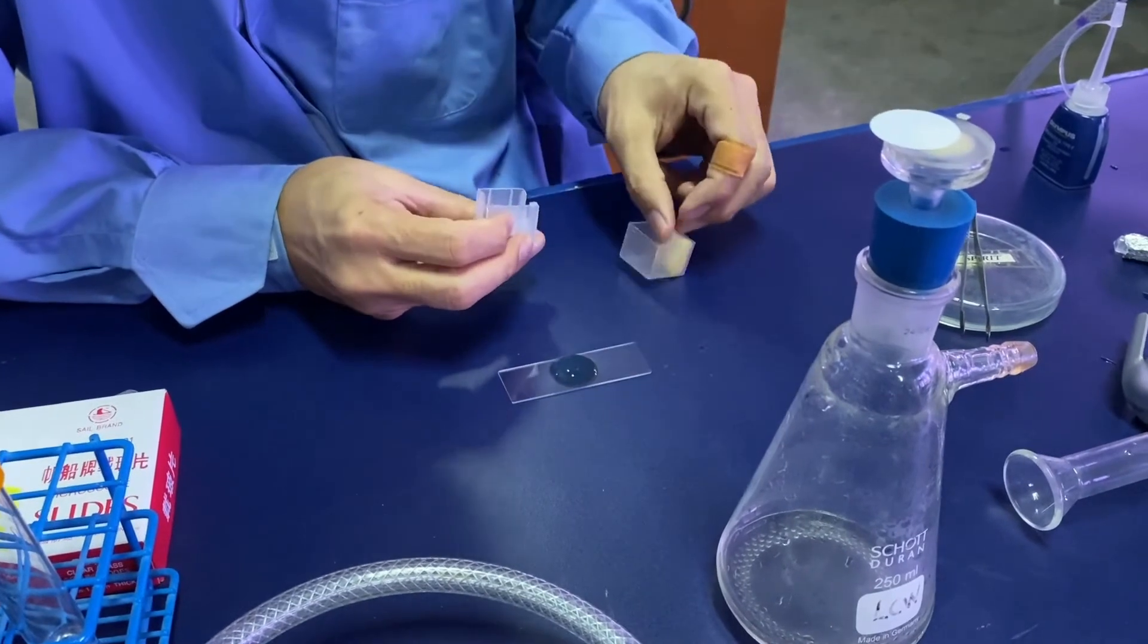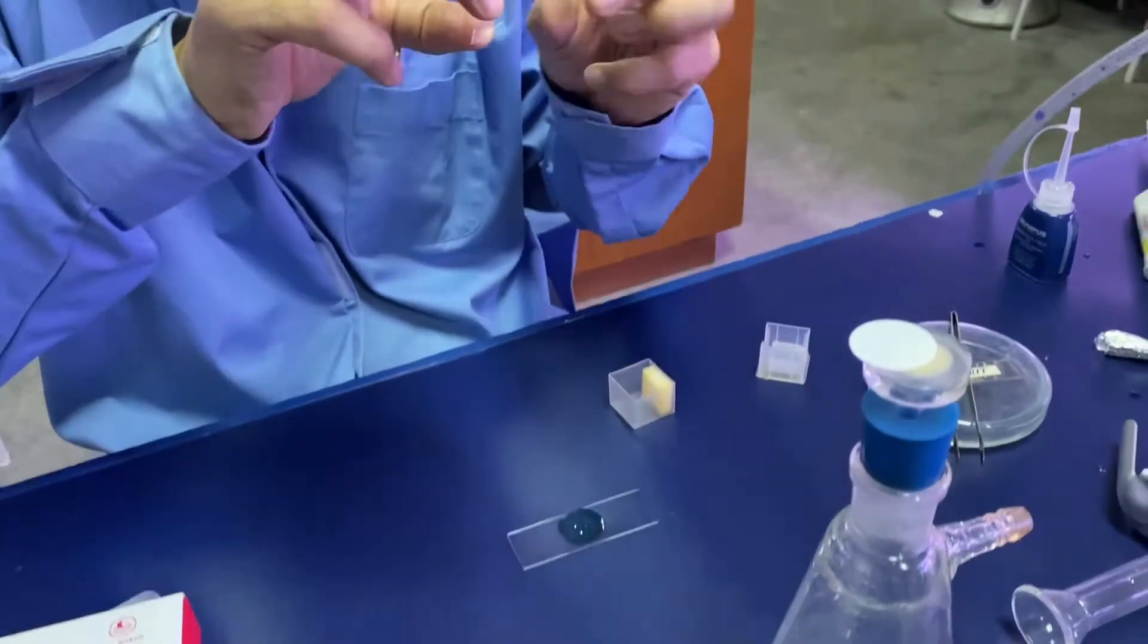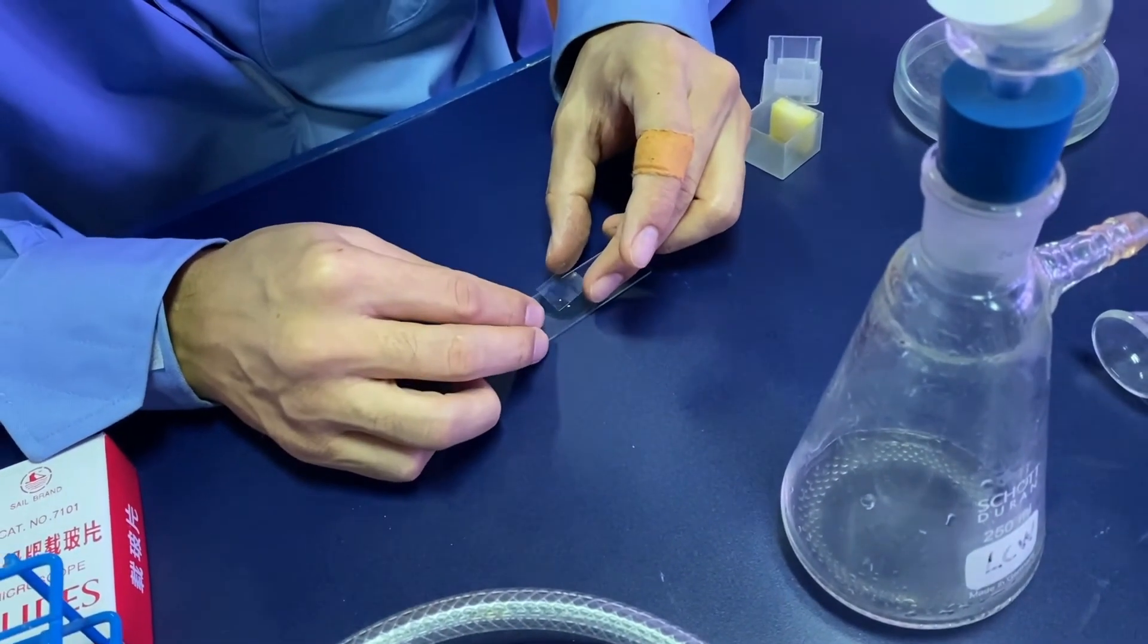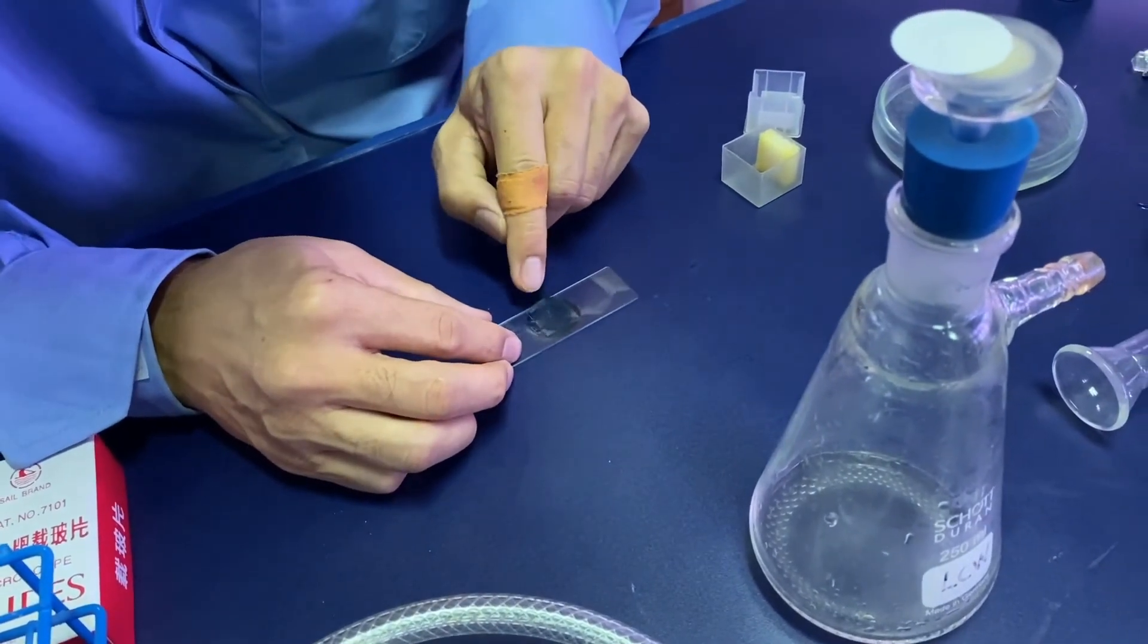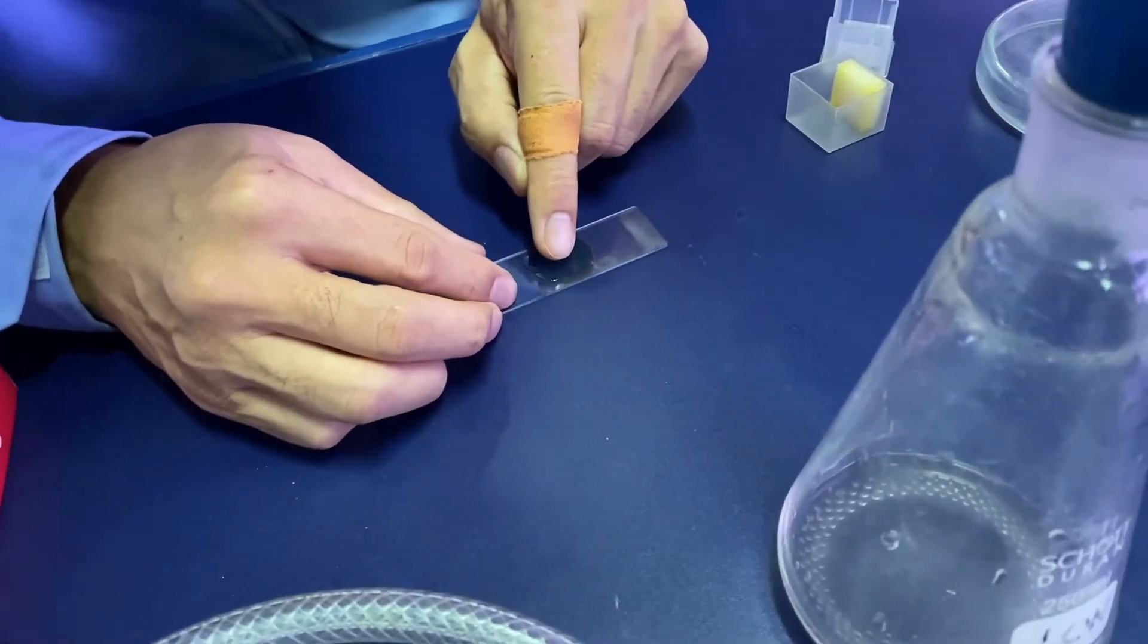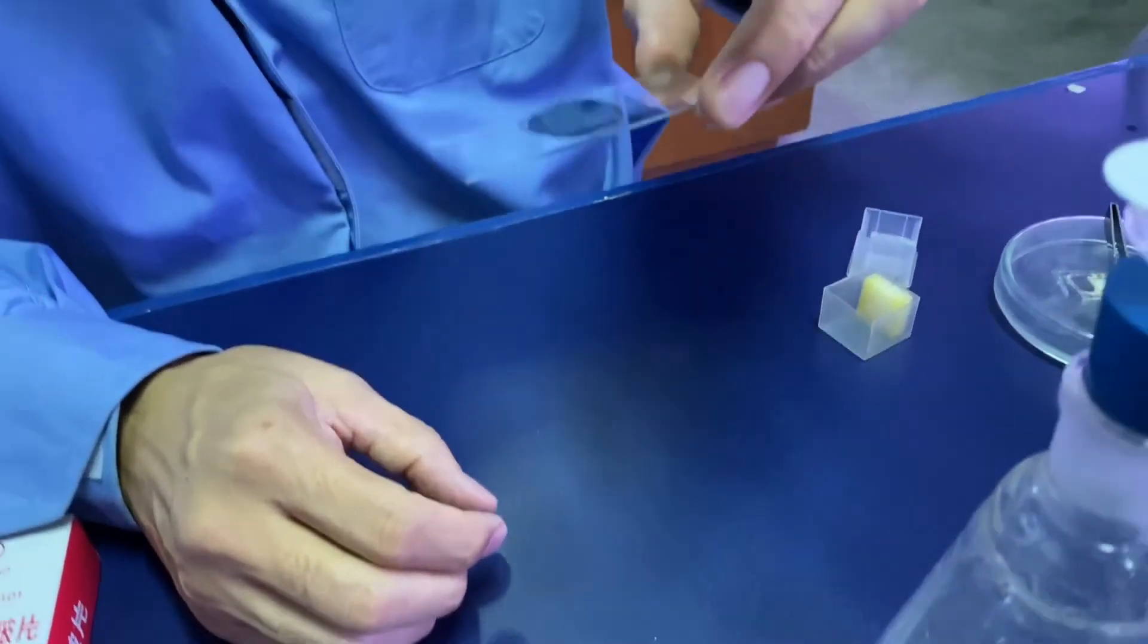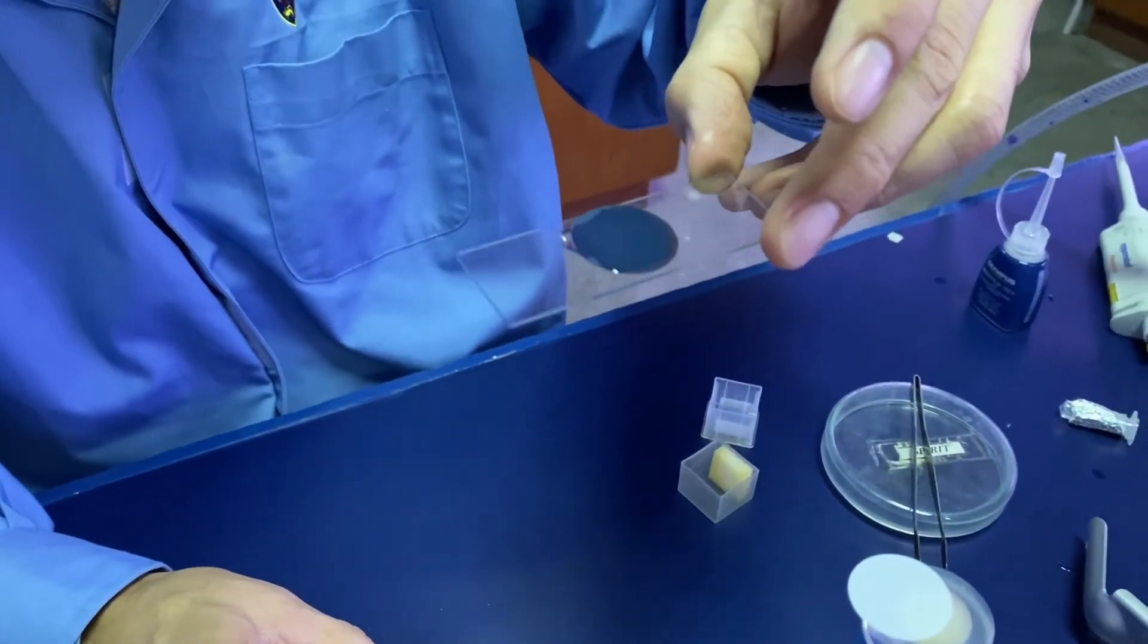Finally cover the whole setup with a glass coverslip. Once it's done, gently press on it in order to ensure that the oil is distributed well. That's how you prepare a filter for epifluorescence microscope direct counting.